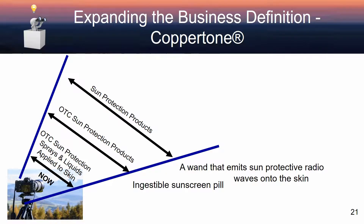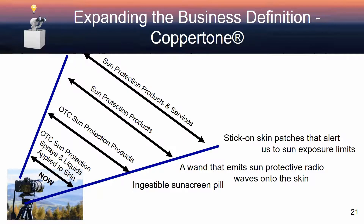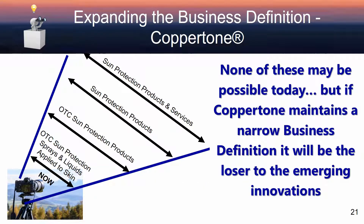Expanding further, we eliminate OTC from their definition and look at sun protection products. In this hypothetical world, we someday have a wand that emits sun-protective radio waves onto the skin. And further broadening their business definition, now we include sun protection products and services. Here, I invent the idea of a stick-on skin patch that provides a service — an alert — to us when our exposure to the sun reaches its limit. If Coppertone maintains a narrow business definition, it will be the loser to any of these emerging innovations.